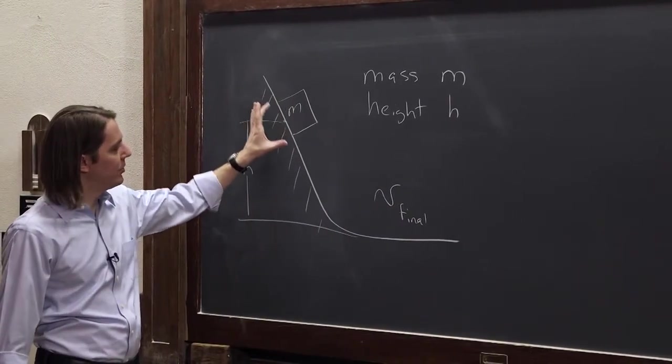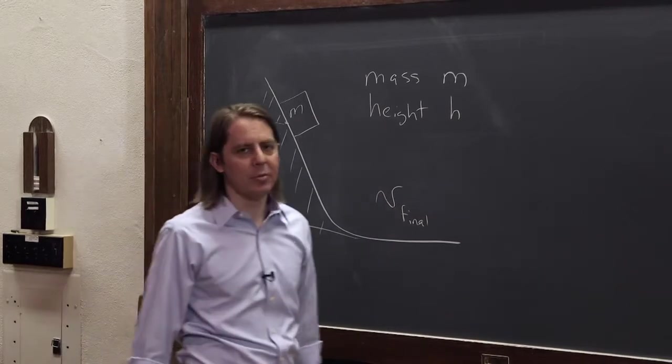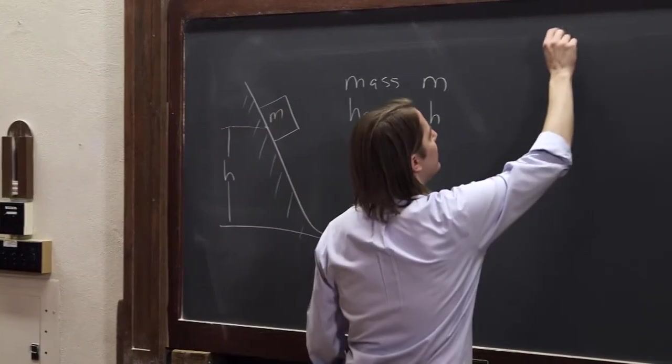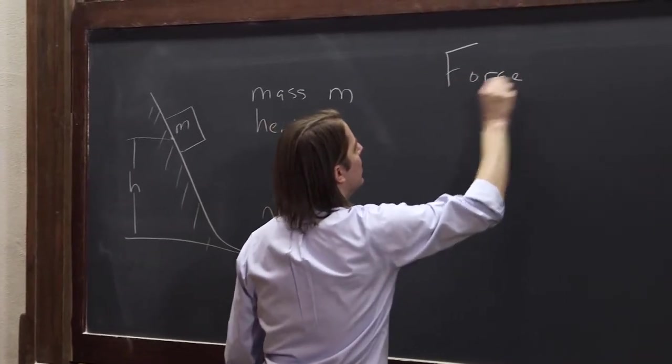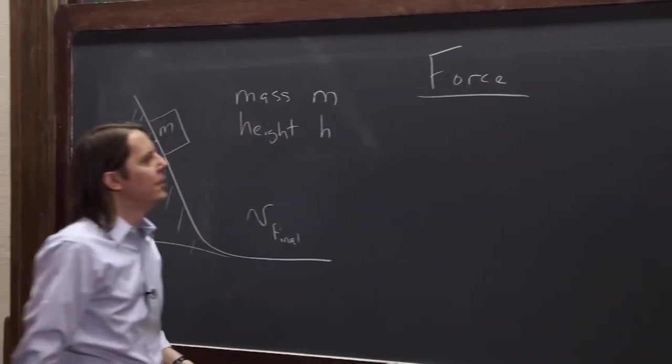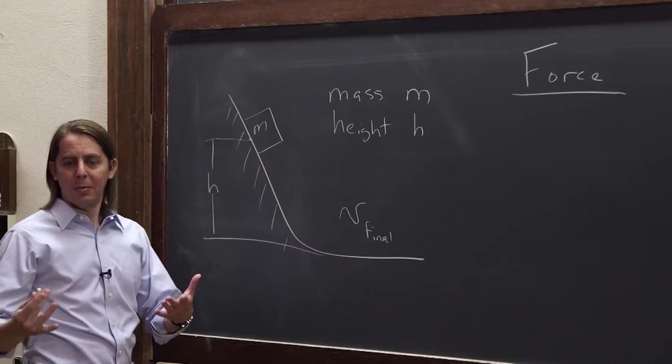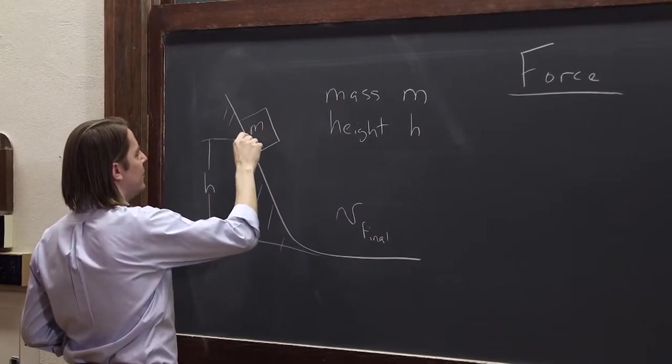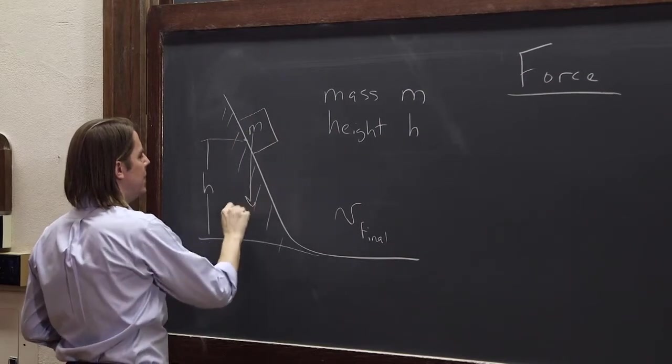So we know if we let it go, it's frictionless. We know it's going to be pulled down, and it's going to end with some speed. So there's more than one way to solve this problem. The first way you would probably solve it is with force. You would look at this, and you'd probably maybe draw a free body diagram. Here, I'll just draw it like this. We'll say the mass is going to feel a force pulling it down, mg.